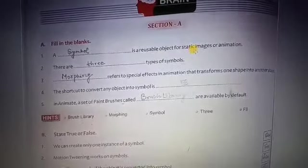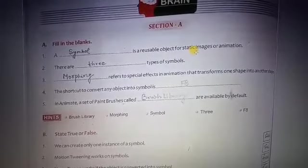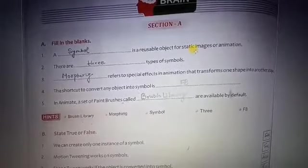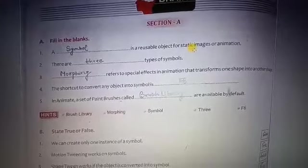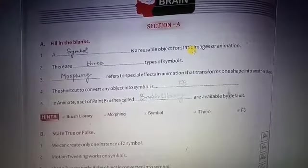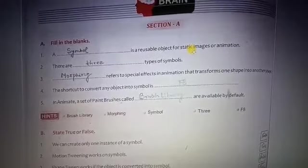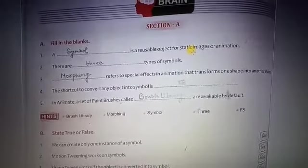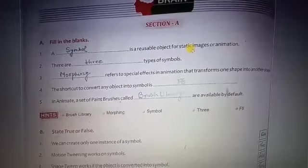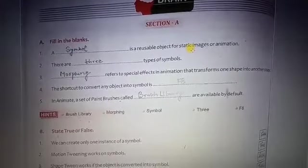Second: There are three types of symbols. Three types of symbols can be used in animation. One is the movie clip, the second one is the button, and the third one is the graphic. These are the three types of symbols.